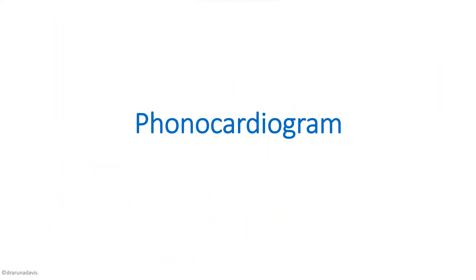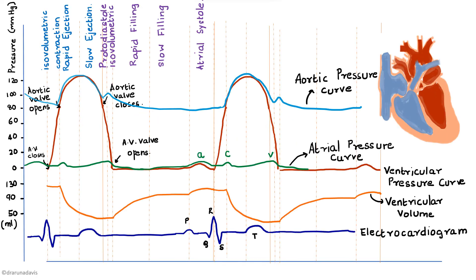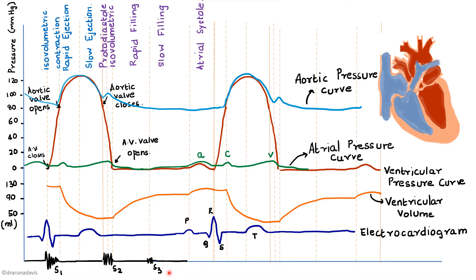The phonocardiogram records heart sounds. S1 corresponds to AV valve closure before the isovolumetric contraction phase — it has a decrescendo pattern of around 10-11 waves. S2 corresponds to aortic valve closure during isovolumetric relaxation — the waves are almost of equal amplitude. S3 occurs during the rapid filling phase of the ventricles; it is normally audible only during high-output states like pregnancy. Draw these for both cardiac cycles and mark as the phonocardiogram.